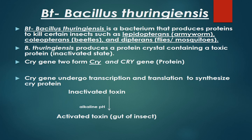The BT gene is also called the cry gene, which is present in the megaplasmid. The cry gene can be written in two forms: if written in italics it refers to the gene and should be underlined; if written in regular form, it refers to the protein. The cry gene synthesizes a protein called crystalline protein.